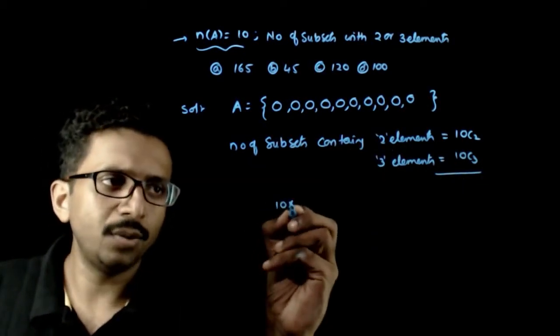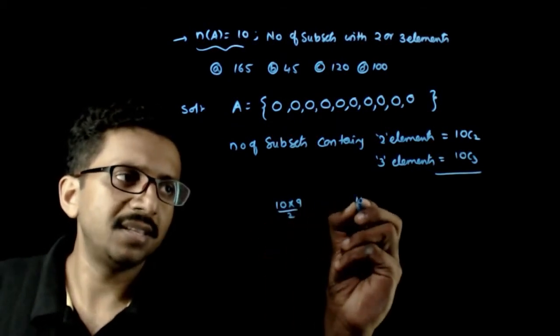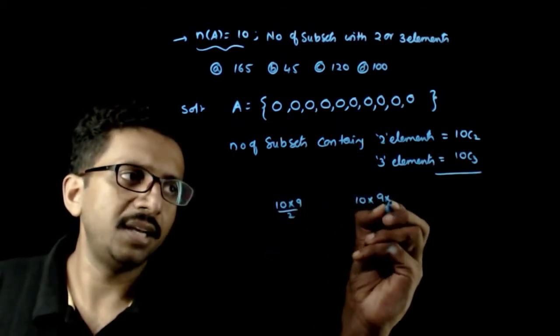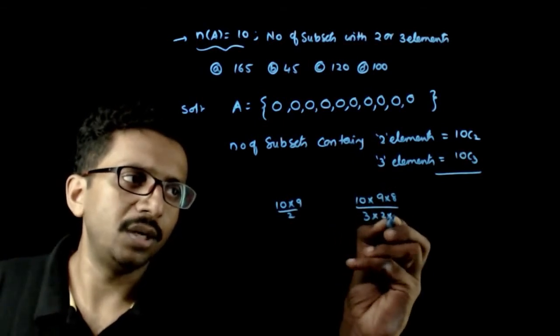10C2 is 10 times 9 divided by 2, 10C3 is 10 times 9 times 8 divided by 3 times 2 times 1.